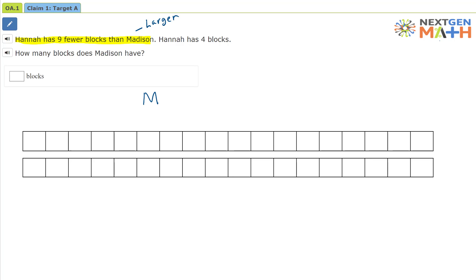And so this top row is going to represent Madison's blocks. These are going to be Madison's blocks. That means the second row is going to be Hannah's blocks. These are Hannah's blocks.